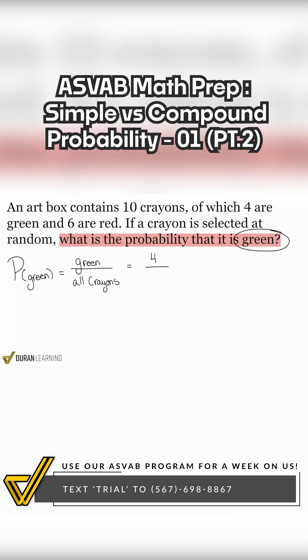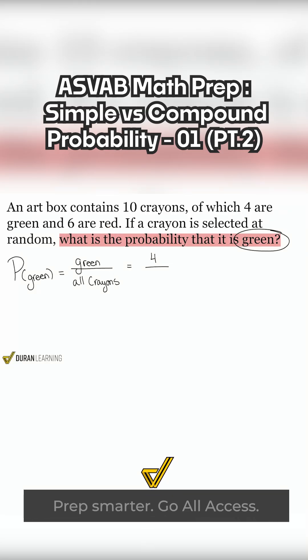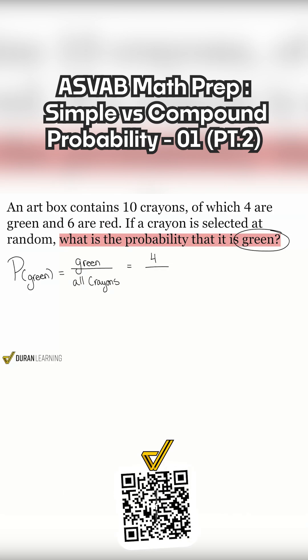So how many green crayons do we have? Correct, we have 4. We'll write 4 up top. And when we're talking about all of the crayons, how many crayons do we have? Correct, it's going to be 10, not 20. It is 10. The art box contains 10 crayons. Of those 10, you have 4 that are green and 6 that are red. What's 4 plus 6? Yeah, 4 plus 6 is 10.